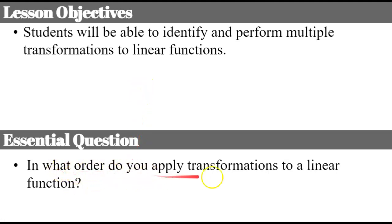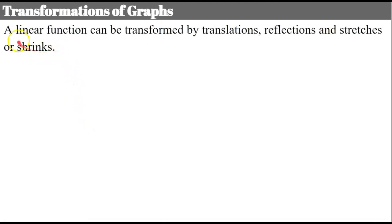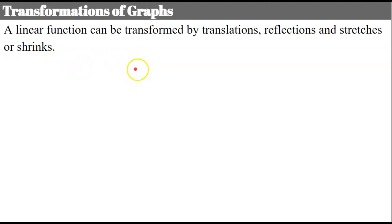In what order do you apply transformations to a linear function? Like a lot of things in math, order matters. Transformations of graphs — when we have a linear function it can be transformed by translations, reflections, stretches, or shrinks. In our first video I taught you that a parent function of a linear function is the line y equals x, or f of x equals x, and that all other linear functions are transformations of that parent function.